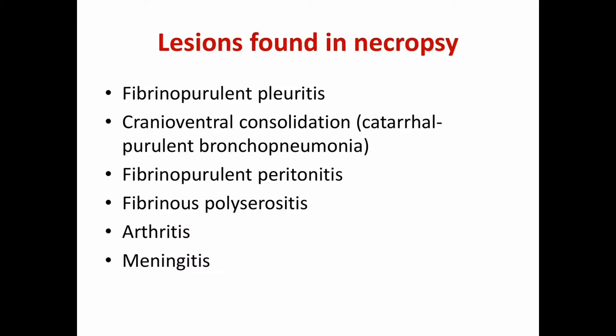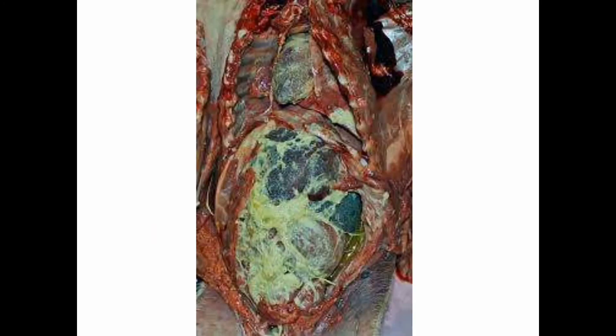This is a piglet that died of Glässer's disease in a per-acute condition with no clinical findings. Let's see what lesions are found on necropsy. The most important are: fibrinopurulent pleuritis, cranio-ventral consolidation of lungs (catarrhal purulent bronchopneumonia), fibrinopurulent peritonitis, fibrinous polycyrositis, arthritis, and meningitis.